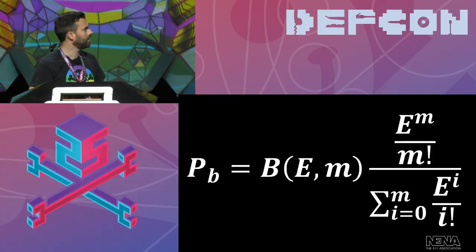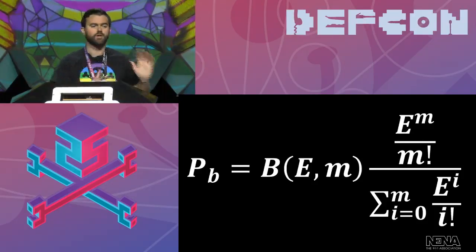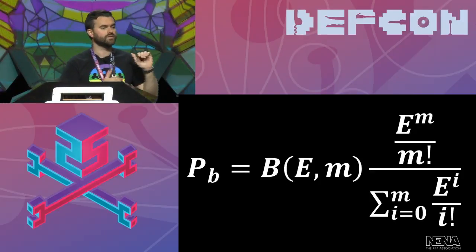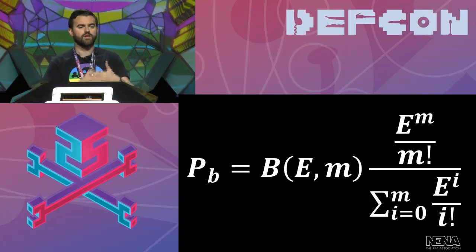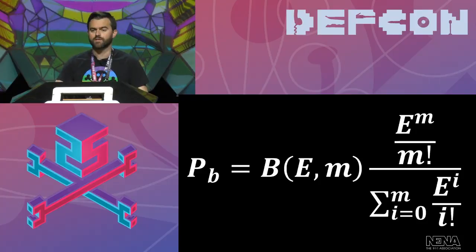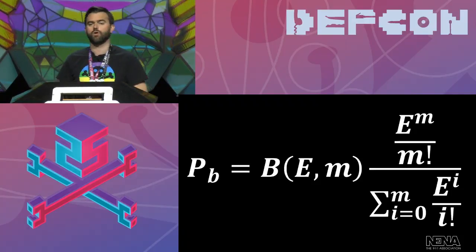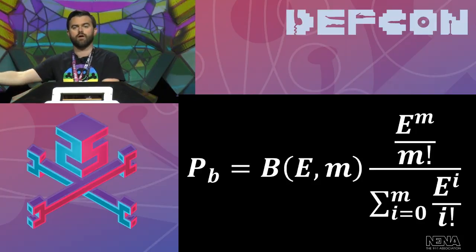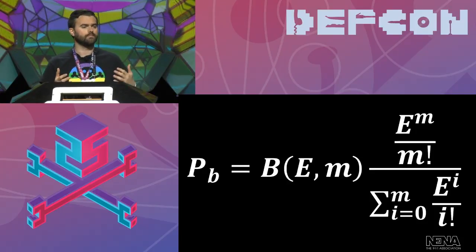This is the Erlang B formula. You don't need to remember this — if you want a walkthrough of the equation, I put a much longer version of this slide deck online in the DEF CON materials. Basically, this tells us the probability of blocking — that's PB — the probability that a resource will be unavailable, if we have M resources available and E, which is the normalized ingress load. Normalized ingress load is simply the average call time multiplied by the average call arrival rate. How often you get calls times how long they are gives you your normalized ingress load. Then by doing this summation, you can compute a probability of blocking.